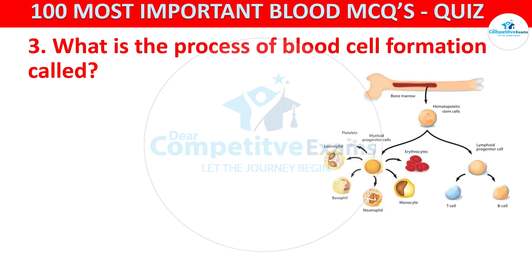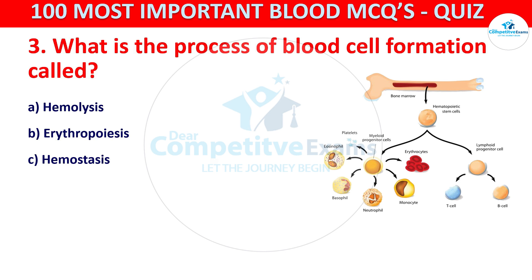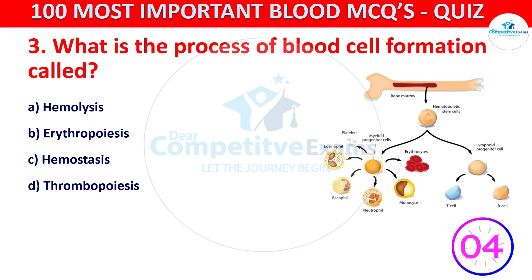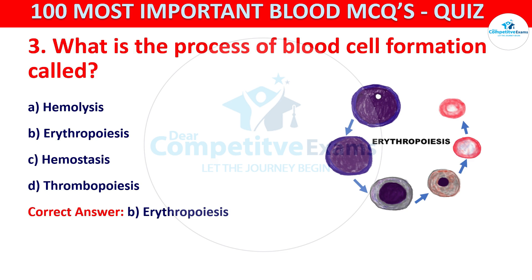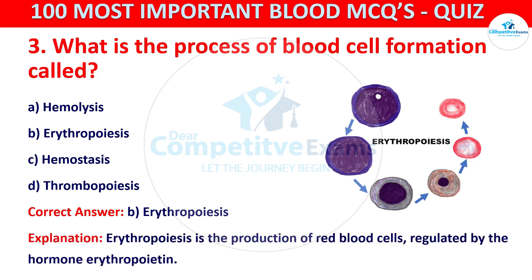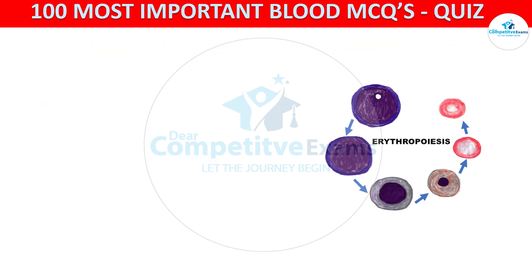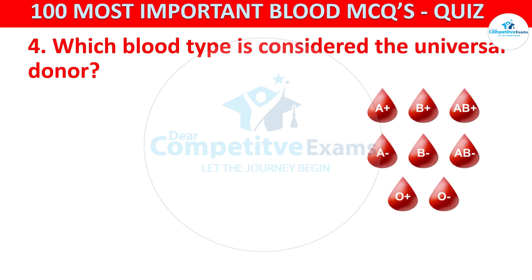Question number three: what is the process of blood cell formation called? The options are hemolysis, erythropoiesis, hemostasis, or thrombopoiesis. The correct answer is B, that is erythropoiesis. Erythropoiesis is the production of red blood cells (RBCs), regulated by the hormone erythropoietin. Question number four: which blood type is considered the universal donor? Your options are A positive, O negative, AB positive, or B negative.